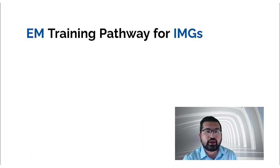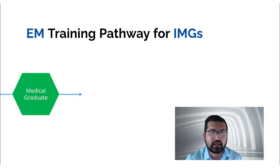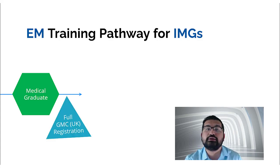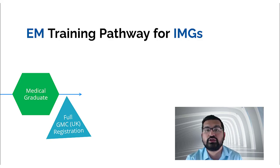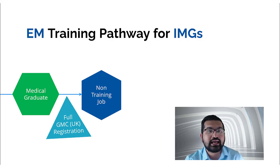For IMGs, what would be the pathway? Let's consider an IMG who is a fairly new medical graduate. The first step is to obtain GMC registration — there are four ways to do this, including the USMLE route. After obtaining GMC registration, you can start a non-training job in the NHS to get into the system, understand how it works, and acquire competencies for later training. If you have not done any internship, you cannot obtain full GMC registration from the outset — you'll need to do foundation training in the UK after PLABs with provisional registration, following exactly the same pathway as UK graduates.